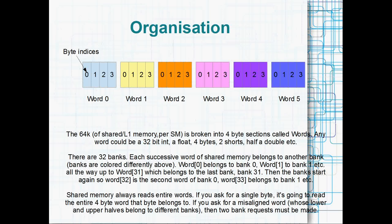There's 64k of shared memory / L1 per SM, and that's broken into four-byte sections called words. The basic unit of arithmetic for any architecture is usually called the word, and for CUDA it's four-byte words. A four-byte region in memory could hold a 32-bit int, it could hold a float, two shorts, or half a double — it doesn't really matter what it's holding. They're broken into four-byte regions. Usually it's little-endian, so the first byte of a word will be the least significant byte.